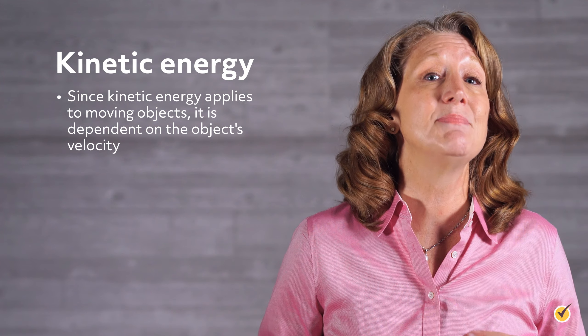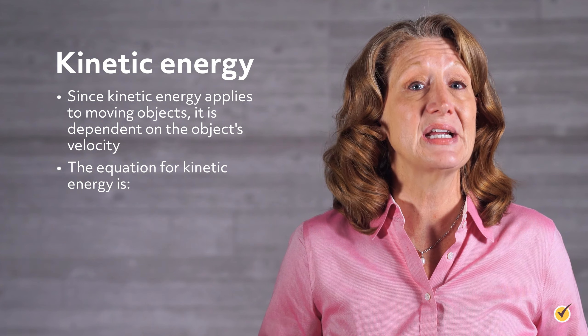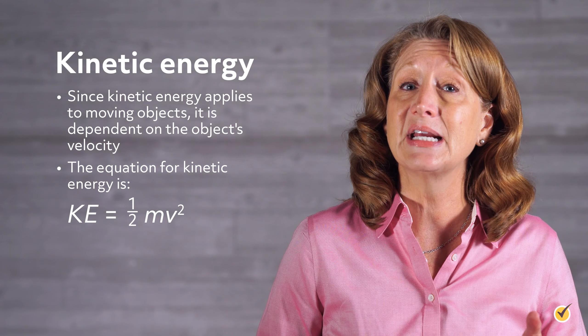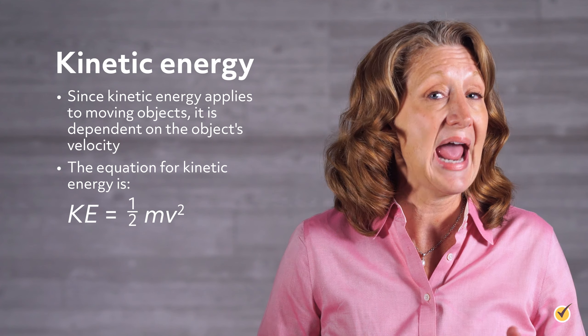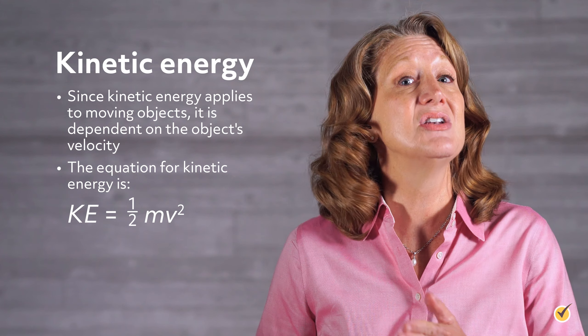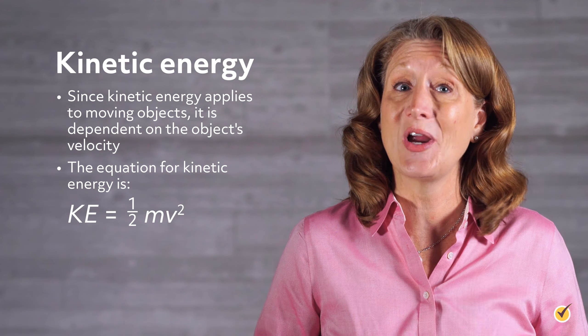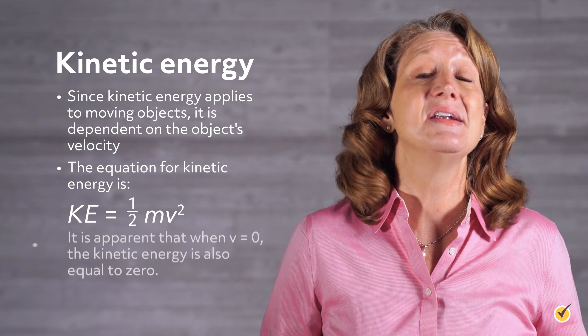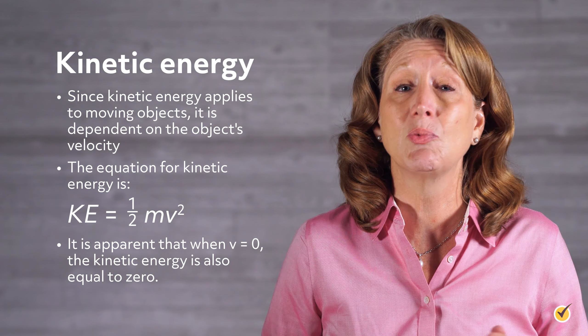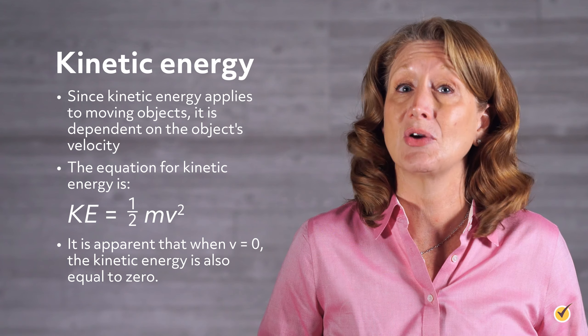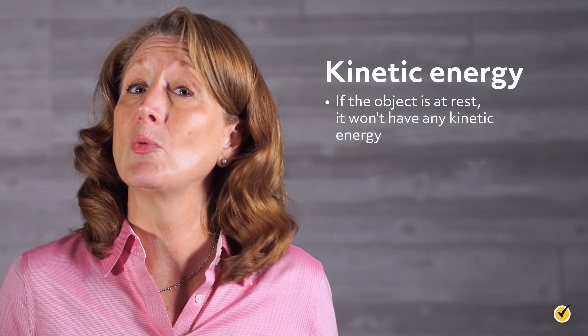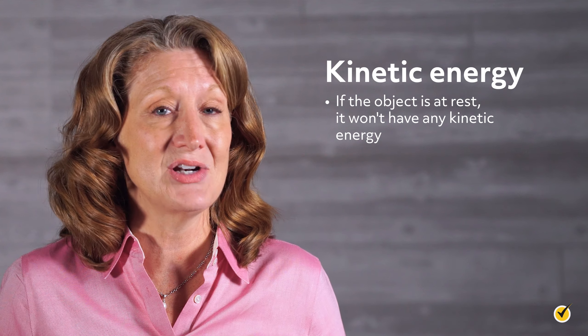First, let's talk about kinetic energy. Since kinetic energy applies to moving objects, it is dependent on the object's velocity. The equation for kinetic energy is: kinetic energy equals one-half times the mass times the velocity squared. Here it is apparent that when v equals zero, the kinetic energy is also equal to zero. This makes sense because if the object is at rest, it won't have any kinetic energy.